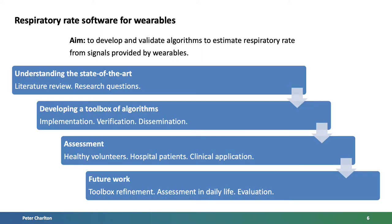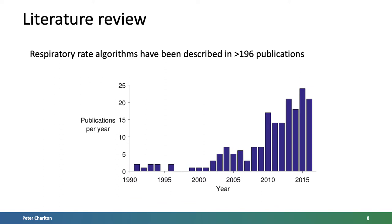In order to achieve our aim, we've undertaken four work packages. Firstly, understanding the state of the art. We've reviewed the literature and found that respiratory rate algorithms have been described in over 196 publications, and that work on this topic is increasing year on year. So there's a lot of work done already on it.